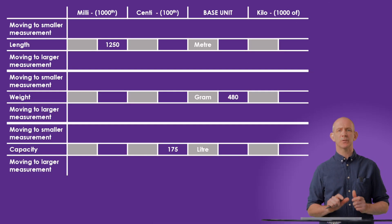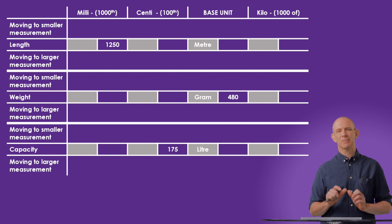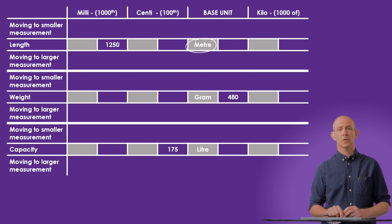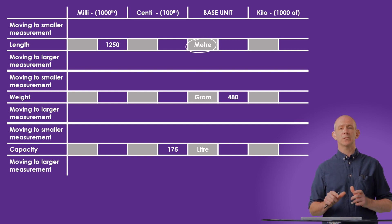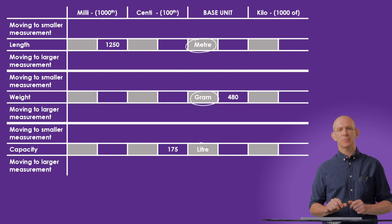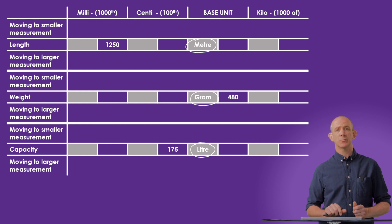Here we have a chart of the three different types of metric measurements: length, weight, and capacity. Each of these has a base measurement — for length we use meters, for weight we use grams, and for capacity, or the space inside an object, we use liters. One of the great things about the metric system is how easy it is to convert between different units within each type.